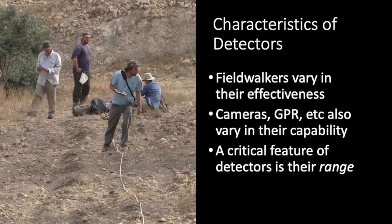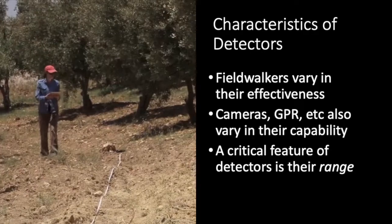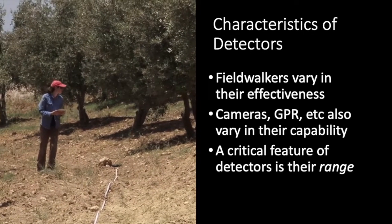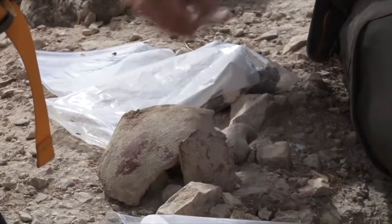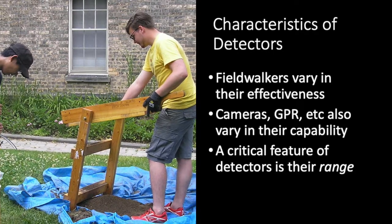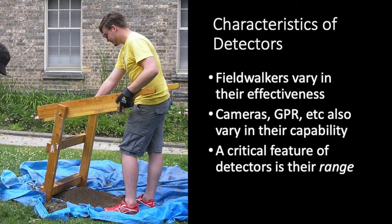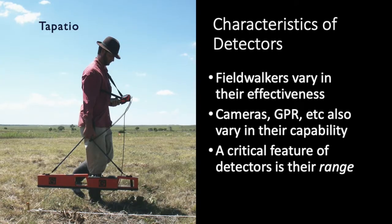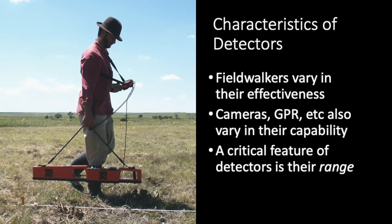Another factor to consider is the capability of the detector, which for field walking happens to be the surveyors' eyes. Surveyors vary in their ability to detect different kinds of artifacts, some being more likely to notice pottery sherds on the ground, while others are better at noticing lithics. This also holds true when they're searching screens during subsurface survey, while detectors like magnetometers and electromagnetic surveying devices also vary in their capabilities.